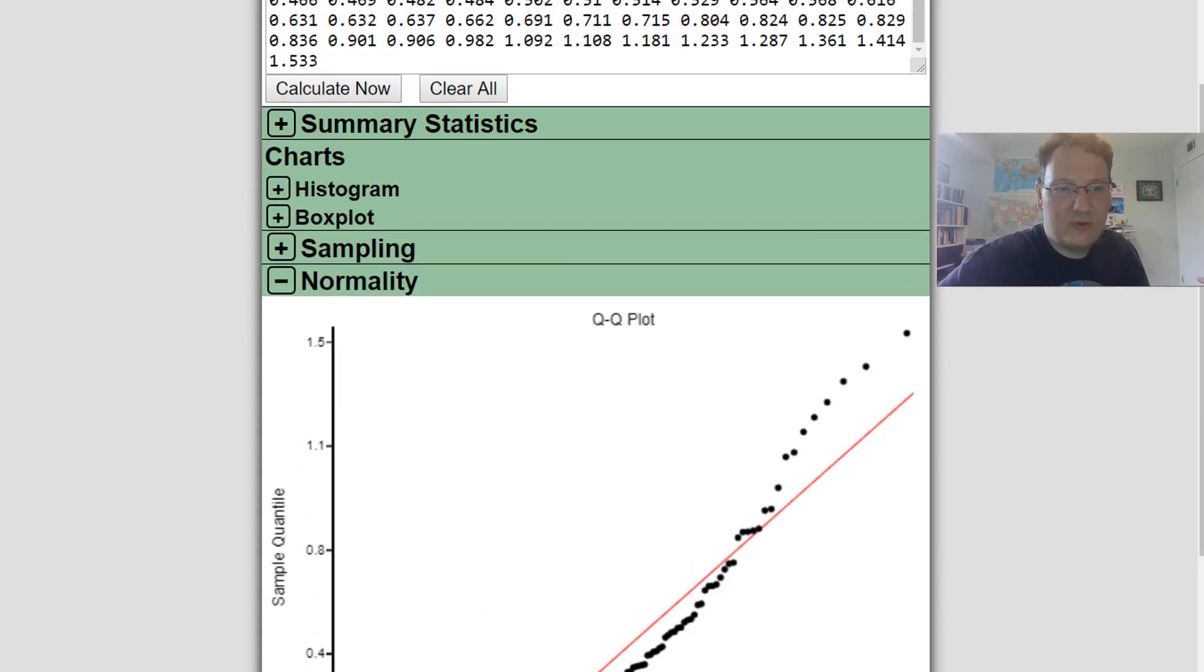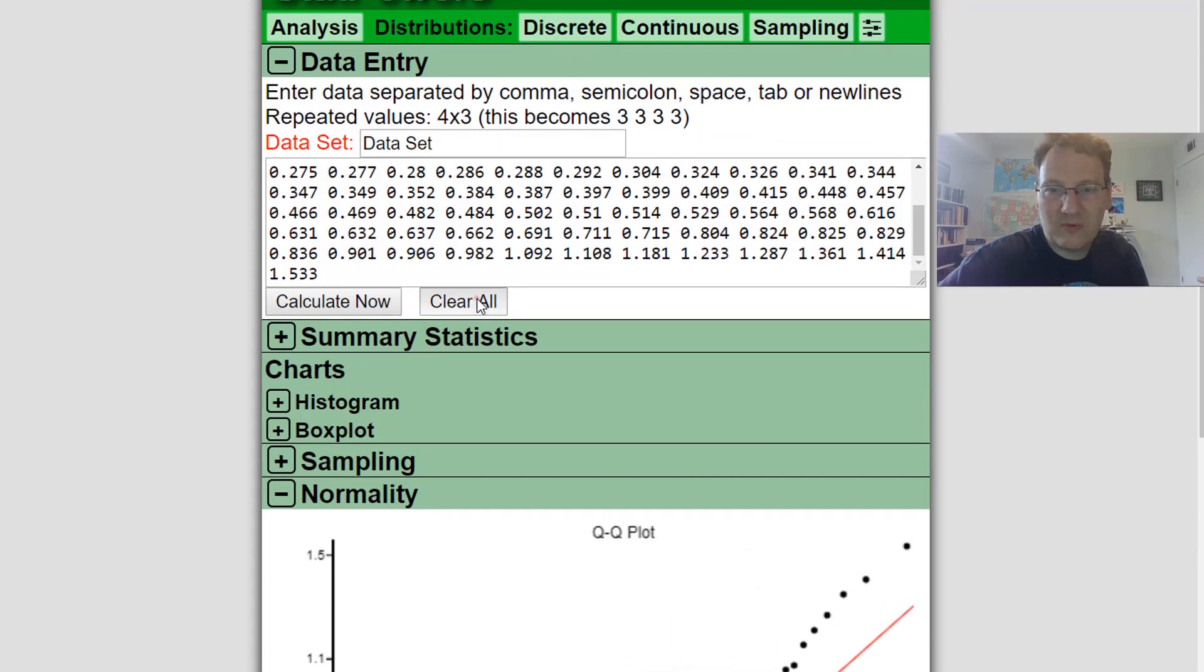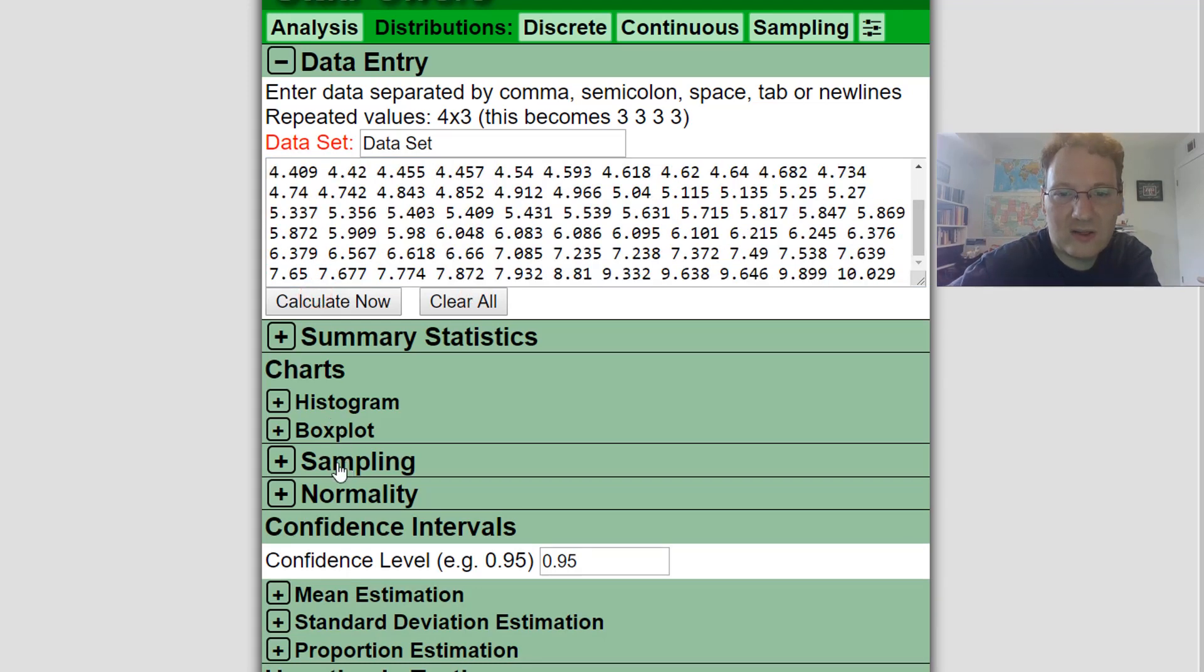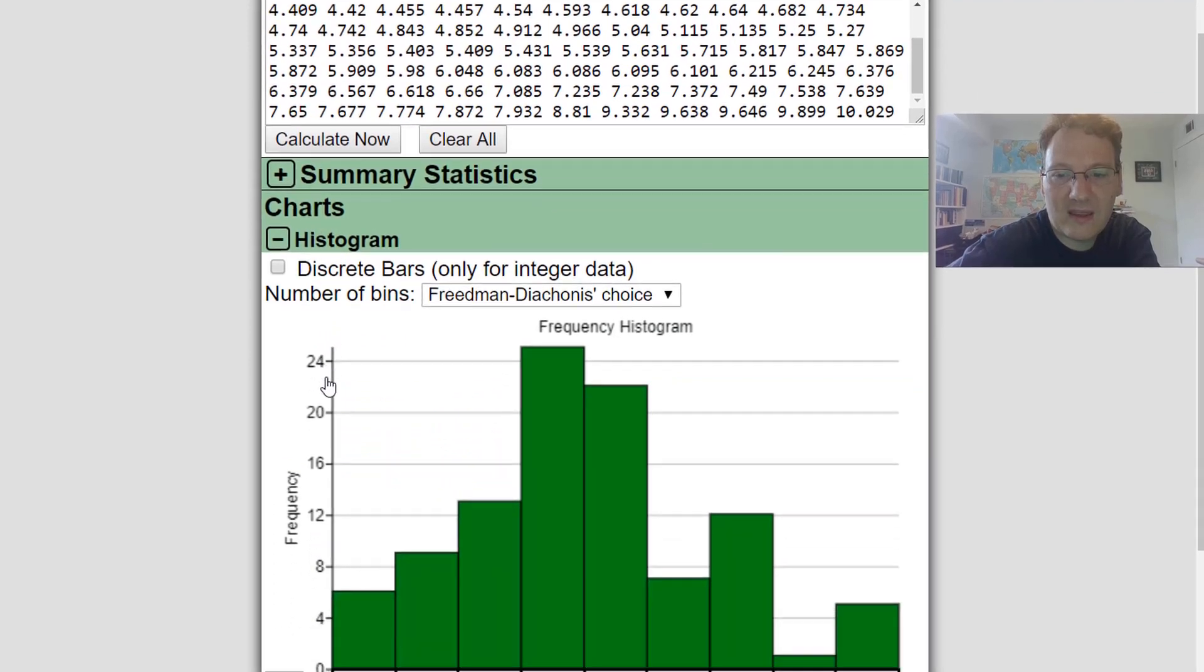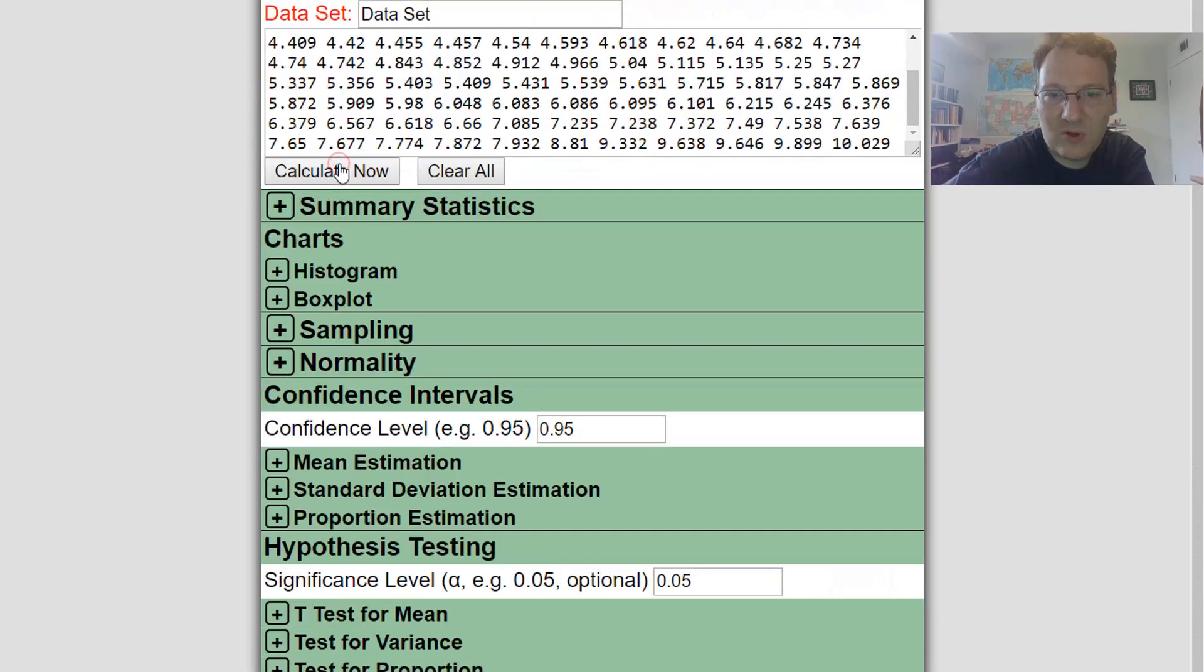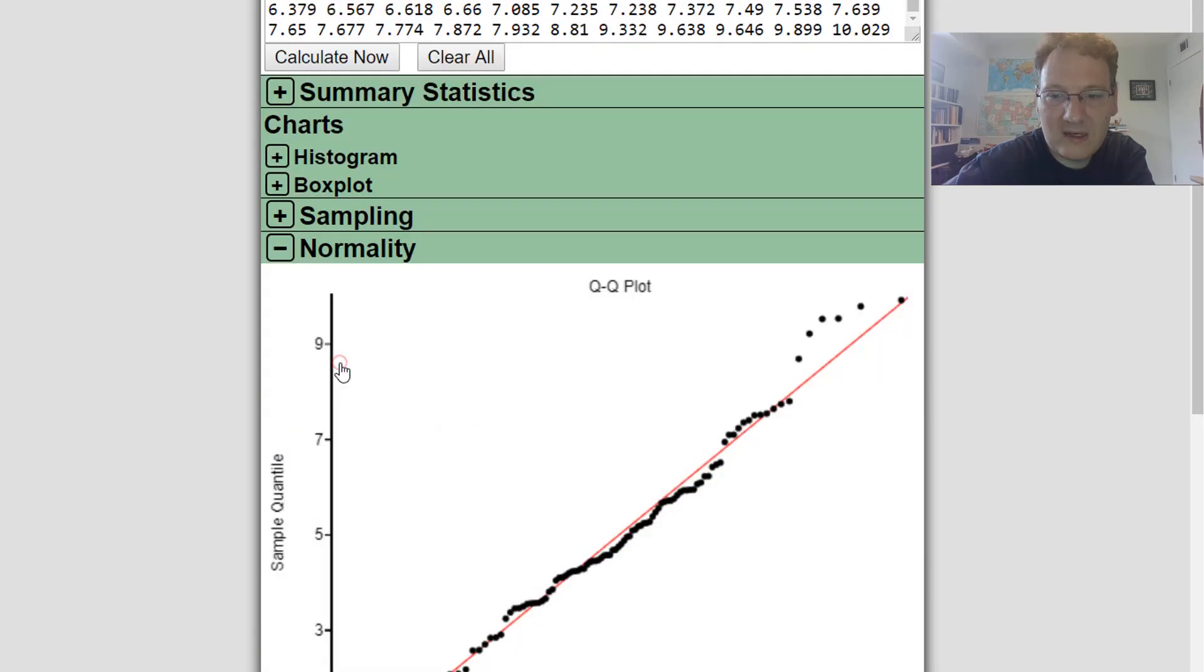Okay, let's do just another example, and you'll see what it might look like if your data was drawn from a normal distribution. So here's another data set. Let's calculate and let's look at the histogram. Okay, that looks a lot more like a normal distribution, doesn't it? And I'm going to look at my normality plot.